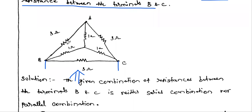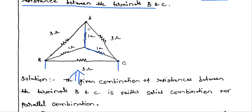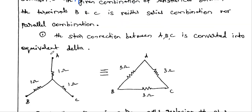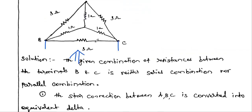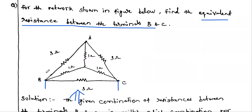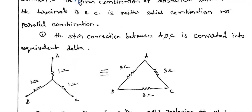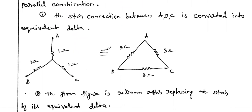We are going to convert the inner star connection into delta. Consider only this inner star network: nodes a, b, c each connected by a 1 ohm resistor. We have to convert this star network into its corresponding delta equivalent.